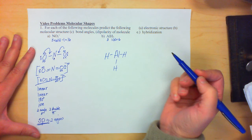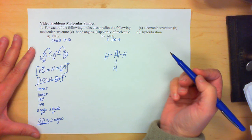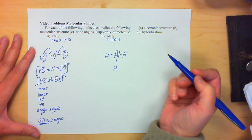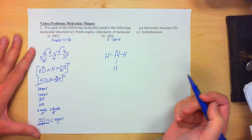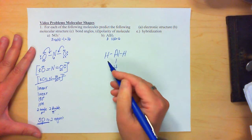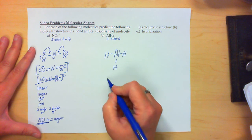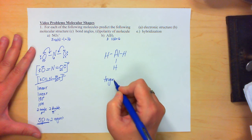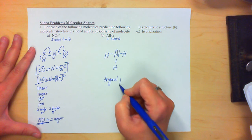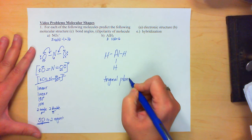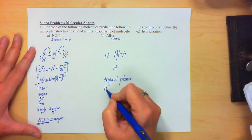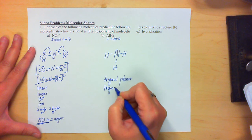And remember, aluminum is an exception to the octet rule, it's happy with six. So this is the structure. When we look at it, we have three electron regions. That makes the electronic shape trigonal planar. The molecular shape is trigonal planar as well.